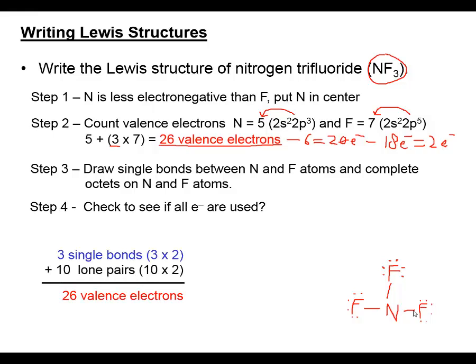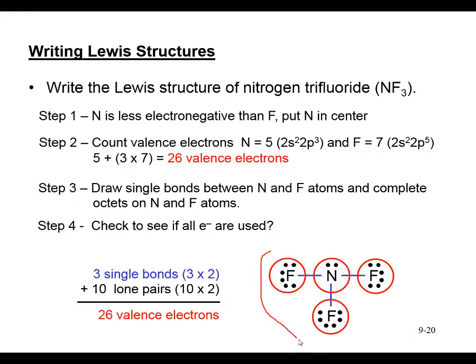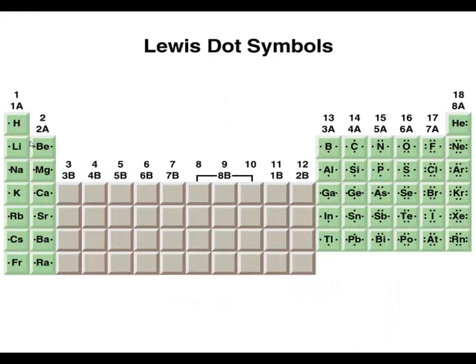Place the remaining 2 electrons on the nitrogen as a lone pair, completing its octet. The final Lewis structure of NF₃ uses all 26 valence electrons. If there had not been enough electrons to complete all octets, we would introduce double or triple bonds. Practice determining valence electrons for all S-block and P-block main group elements.